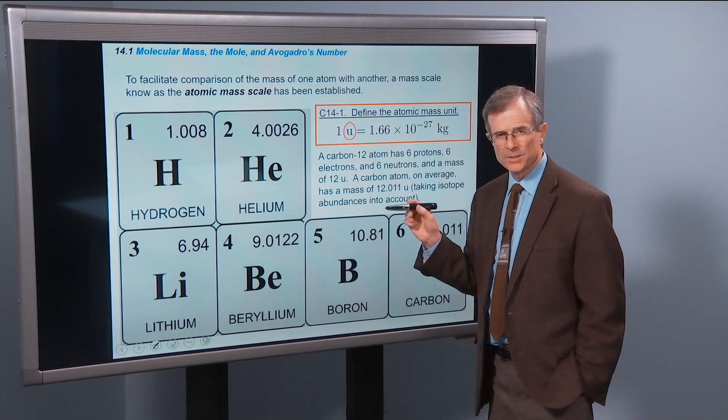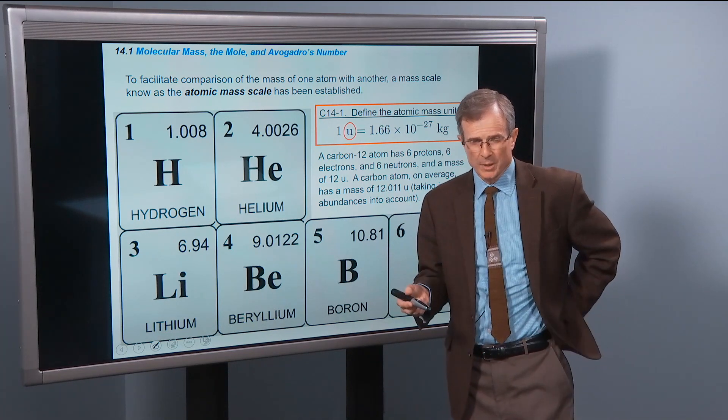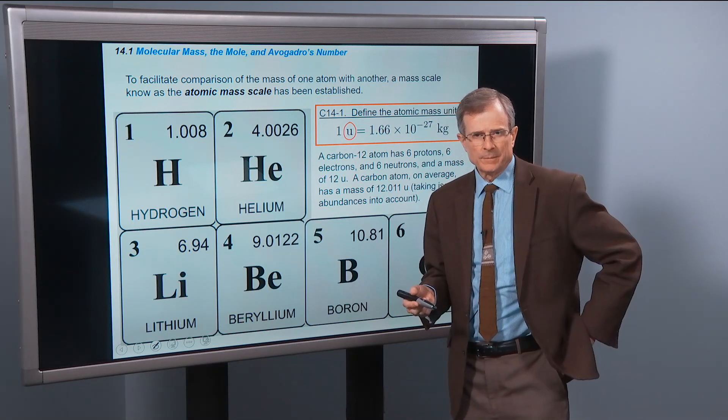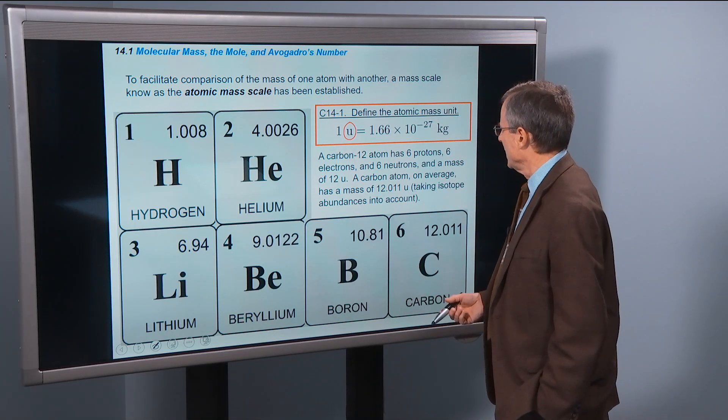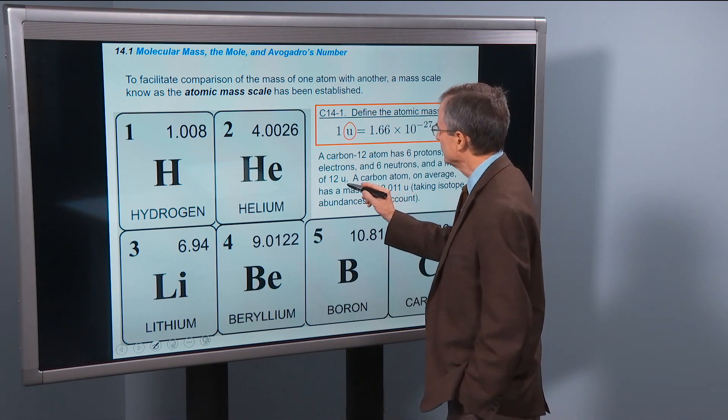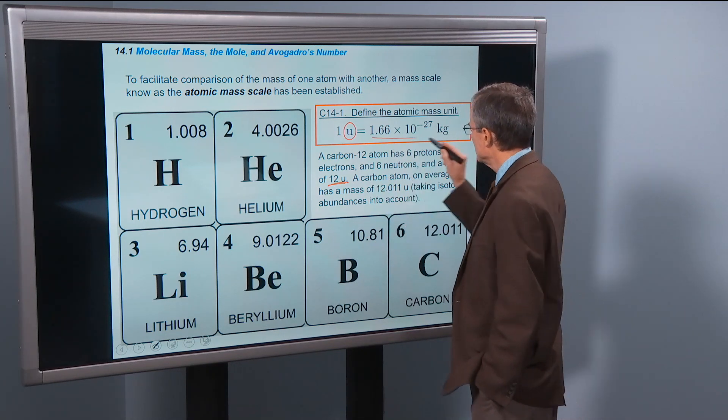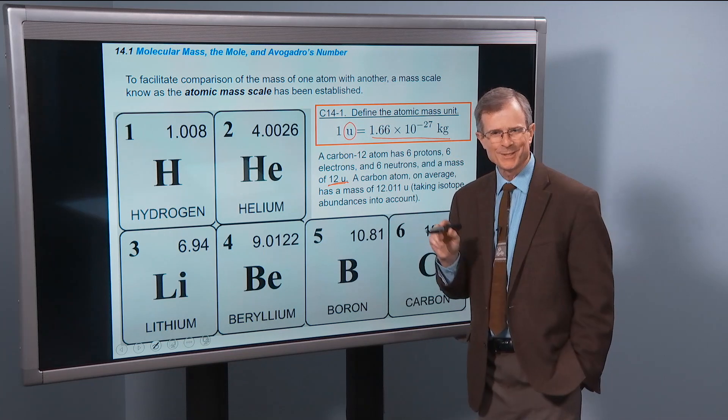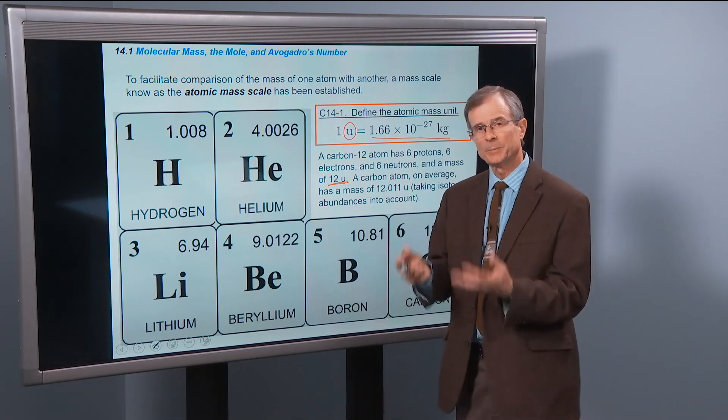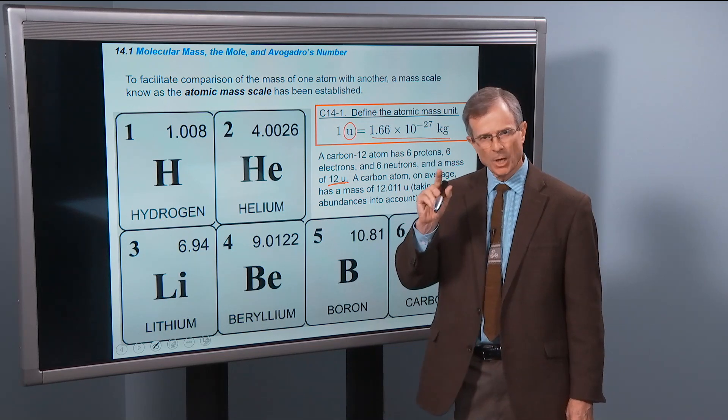It's defined in such a way that the carbon-12 atom, which is a very important atom in nature as well as in our human body, has exactly a mass of 12U. So 12 times this number, 1.66 times 10 to the minus 27, is the mass of one carbon-12 atom.